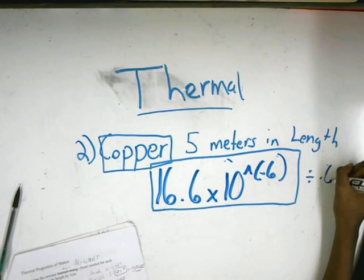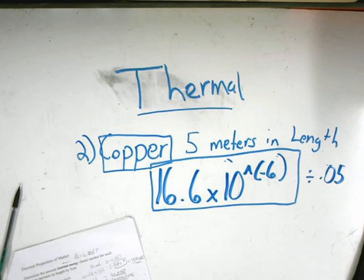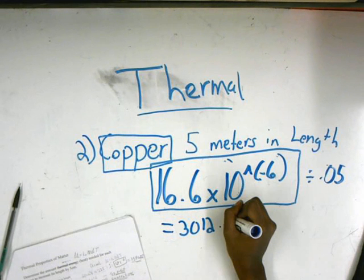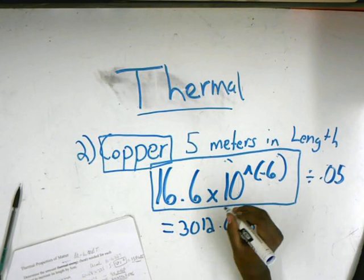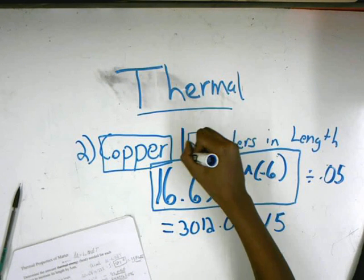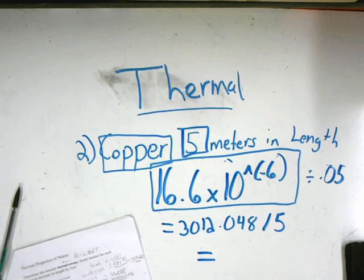Which would give you, let's see, times 10 to the negative side. Divided by 0.05, which would equal 3,012.048. But you're still not done. You have to take the count of the five meters from here, which you would divide into that. Equals 602.409 is your answer.